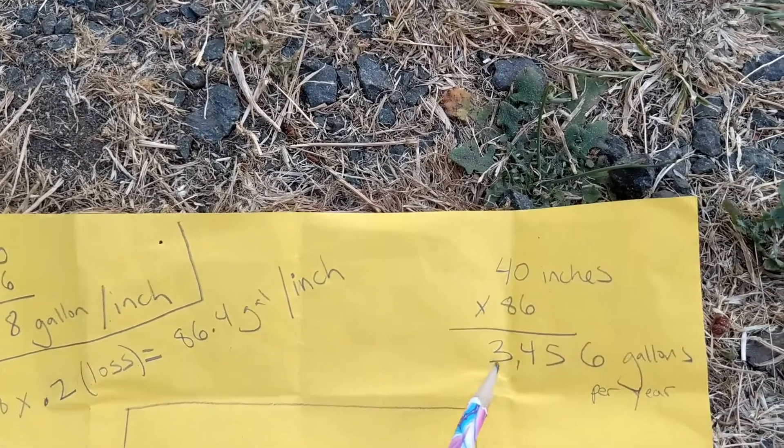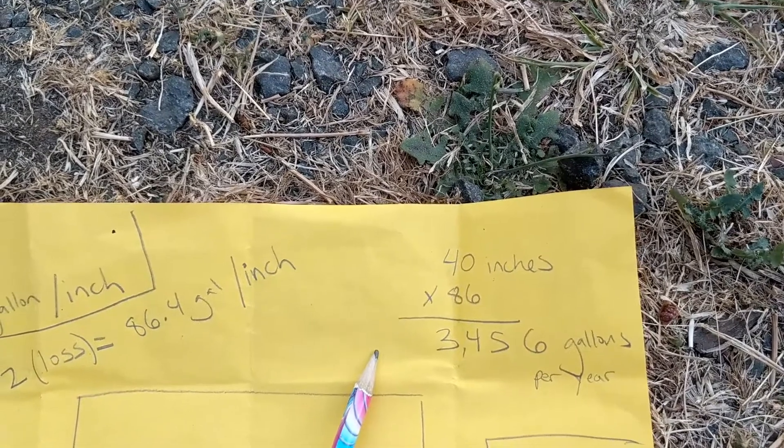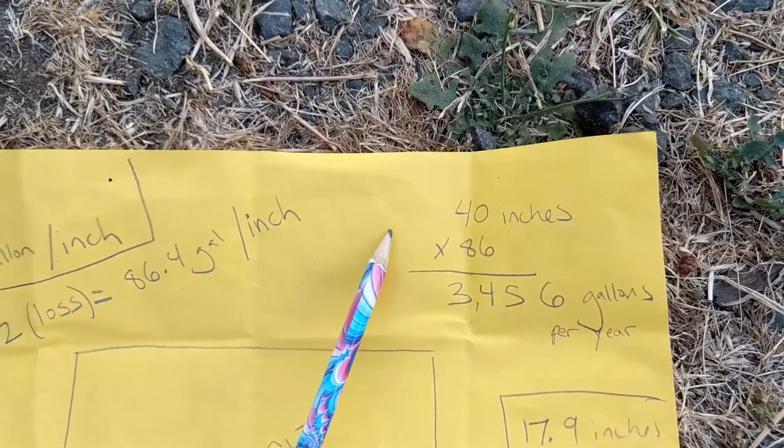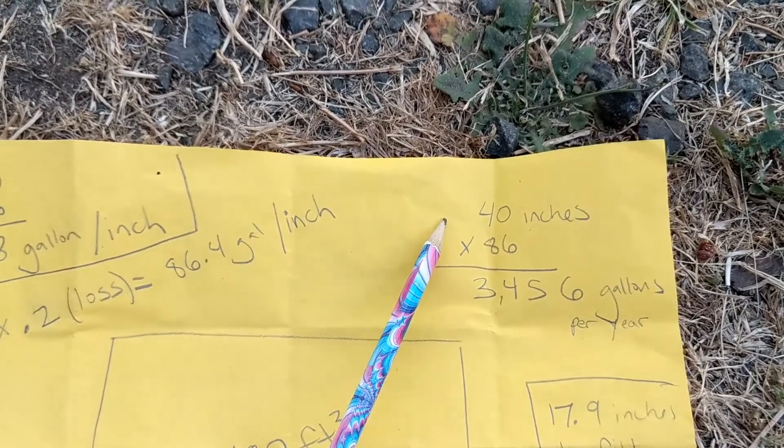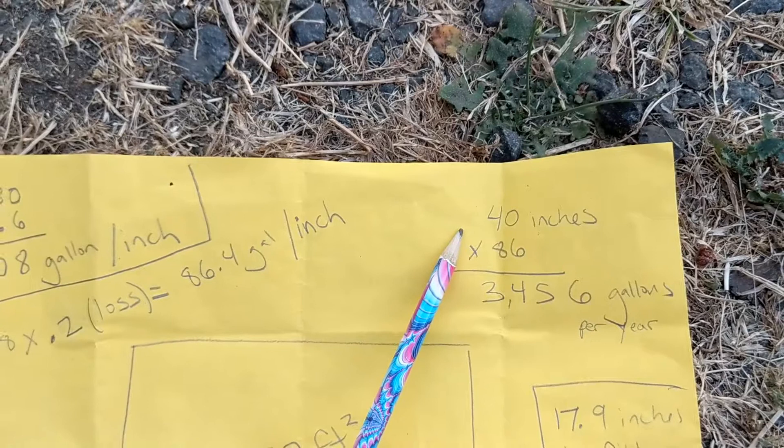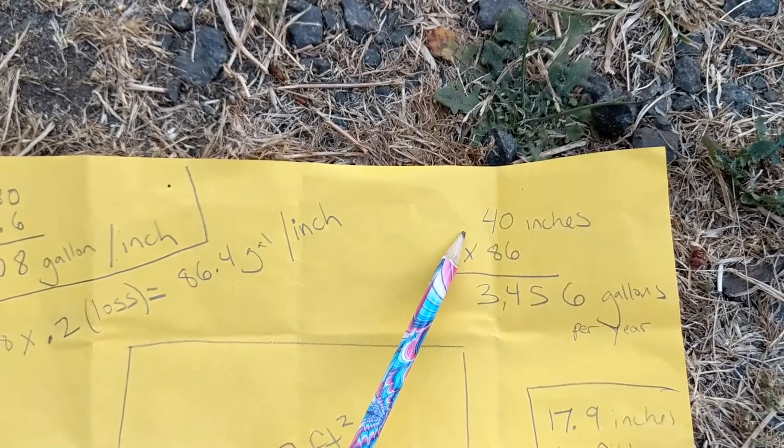How many gallons could we collect? ¿Cuántos galones podríamos nosotros recolectar? So in this area, 40 inches per year is average. En esta área de Eugene, 40 pulgadas es el promedio.